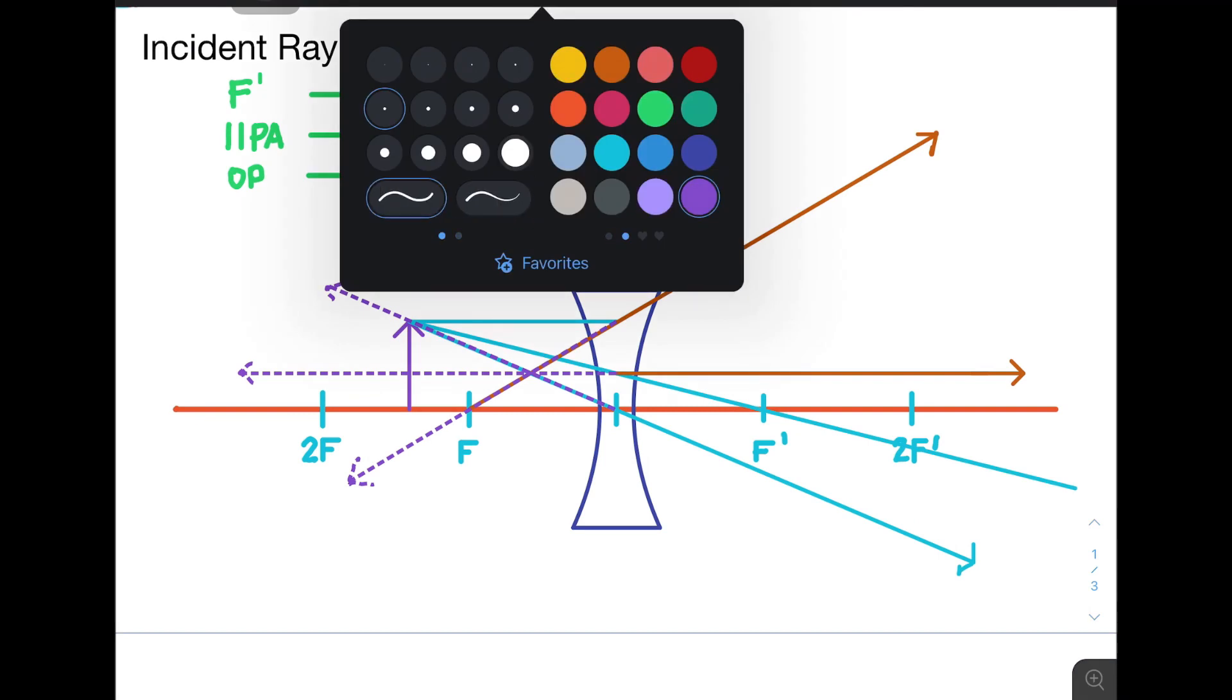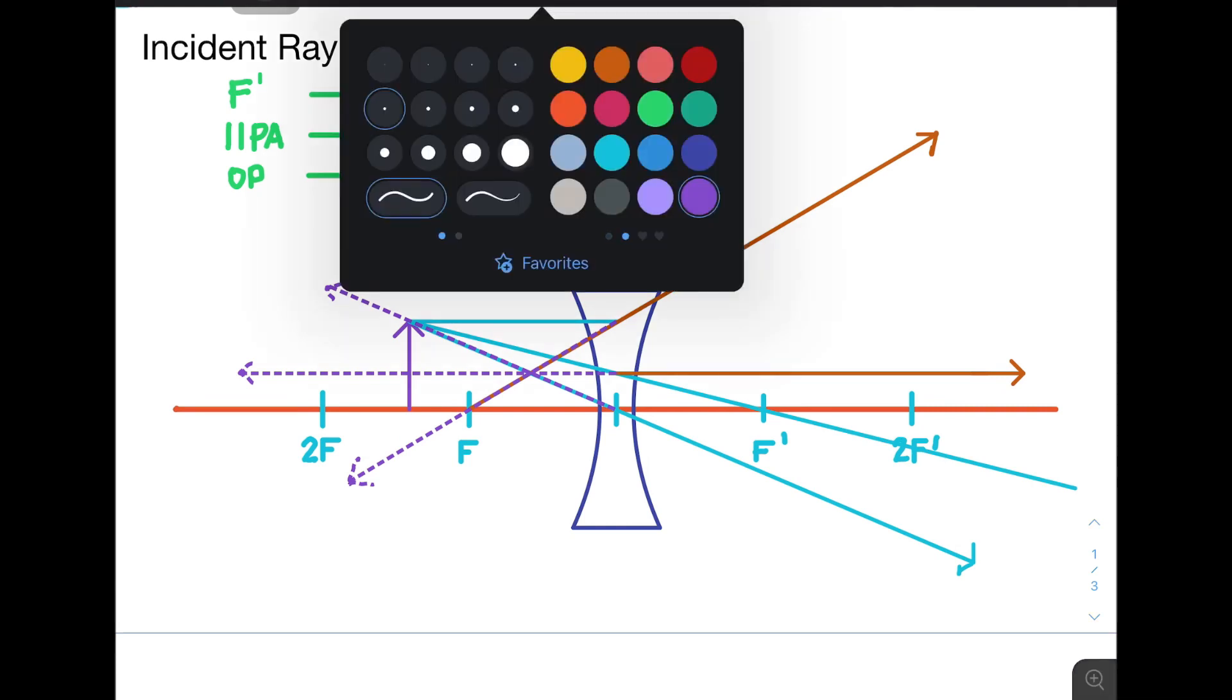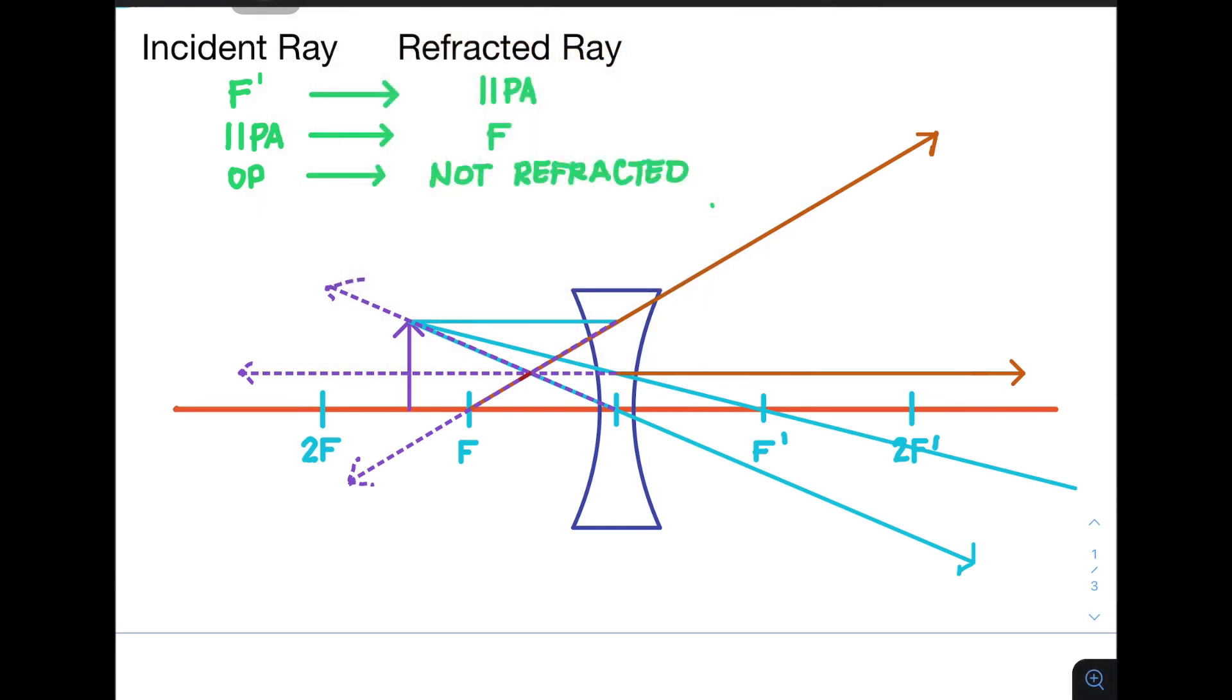It means that this will be the location where the image is formed, and the image formed is the point in which it originated, which is the tip of the arrow here. I'm going to make it a different colored one so that you could see it clearly.